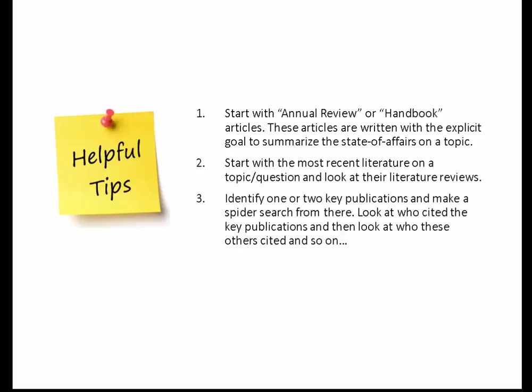Second advice: start with the most recent literature on your topic and look at their literature reviews — basically walk your way backwards. If you find an important piece of work published in 2000 and look at who is cited in it, you only find work that existed before 2000 — so you're missing out on everything since then. That's the reason why you should start with the most recent work and then work your way backwards; otherwise you miss things because they just didn't exist at the time.